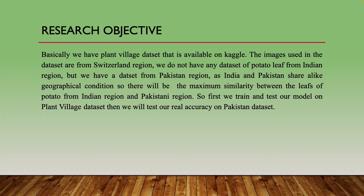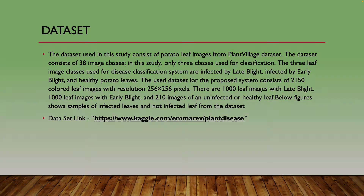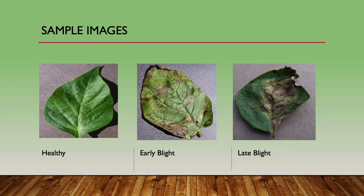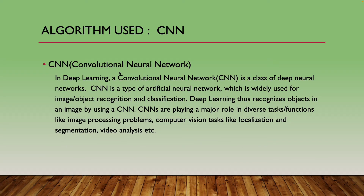Before India's independence in 1947, Pakistan and India were one region, so the land and geographic conditions are the same. We will train and test our model on the PlantVillage dataset, then test real accuracy on the Pakistan dataset. Sample images show early blight, late blight, and healthy potato leaves.